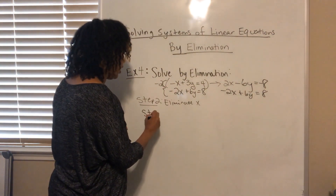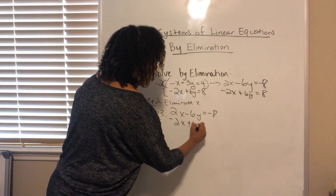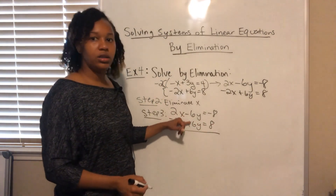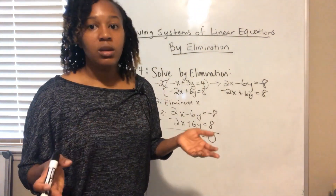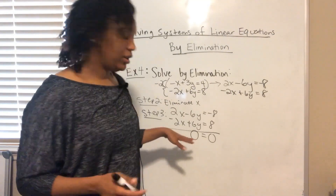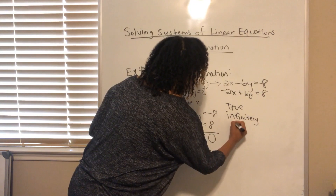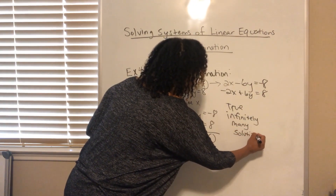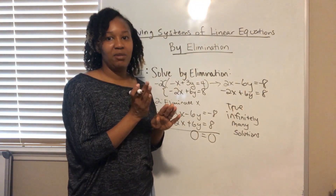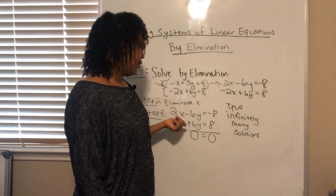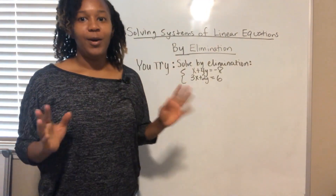When we add the two equations together, the 2x's cancel and so do the y's — negative 6y and positive 6y cancel — and the constants also cancel, leaving us with 0 equals 0. Since all variables eliminated, we look at the final statement. Zero does equal zero — that's a true statement, which means there are infinitely many solutions. The lines are exactly the same and lie on top of each other.